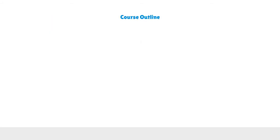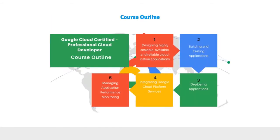The GCP Cloud Developer exam course outline covers five areas: First, designing highly scalable, available, and reliable cloud-native applications. Second, building and testing applications. Third, deploying applications. Fourth, integrating Google Cloud Platform services. Fifth, managing application performance monitoring.